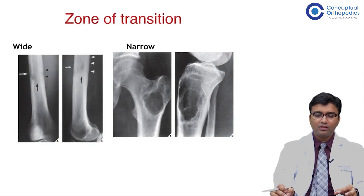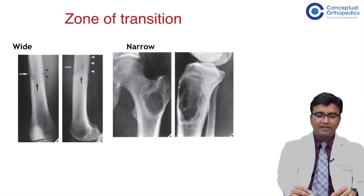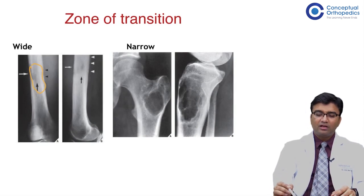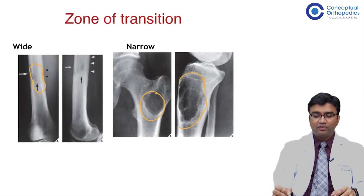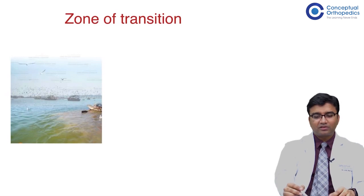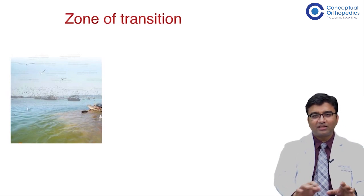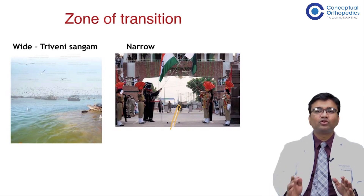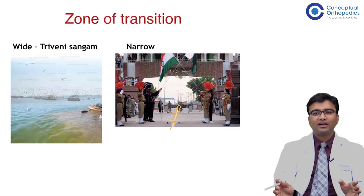The zone of transition refers to where the lesion merges with normal bone. A wide zone means the boundary is not clearly defined, while a narrow zone means it is very well-demarcated and you can mark it with a pen. By analogy, a wide zone is like where three rivers meet at the Triveni Sangam — difficult to pinpoint — while a narrow zone is like an international border where you know exactly where you are crossing.